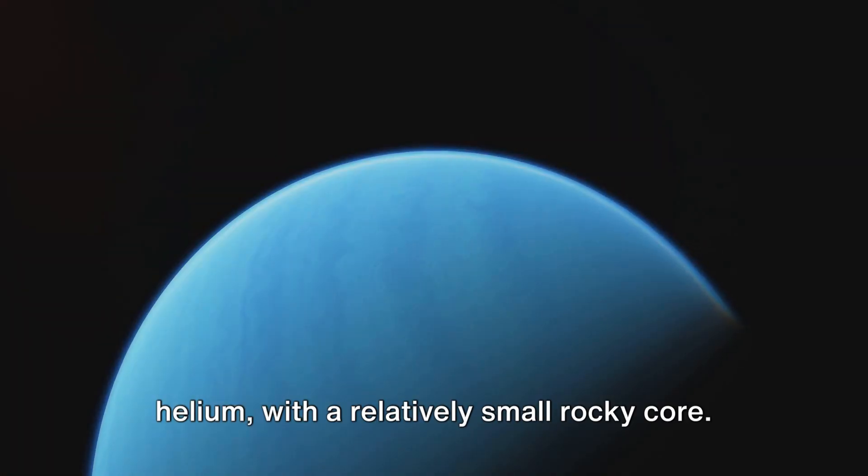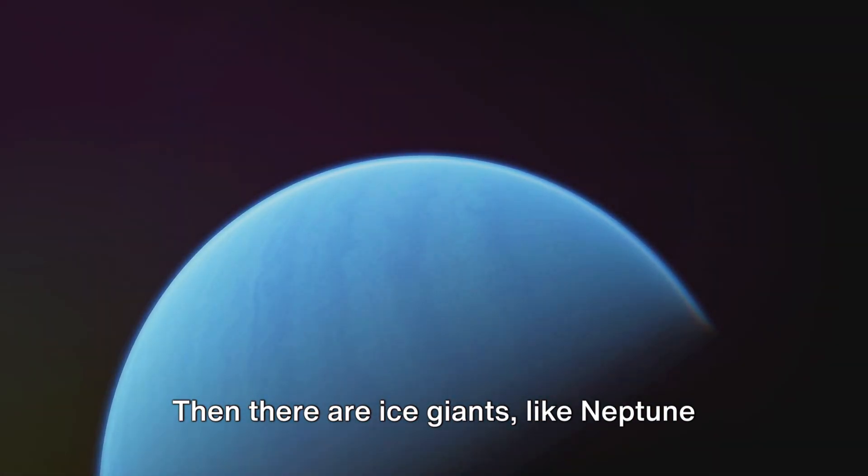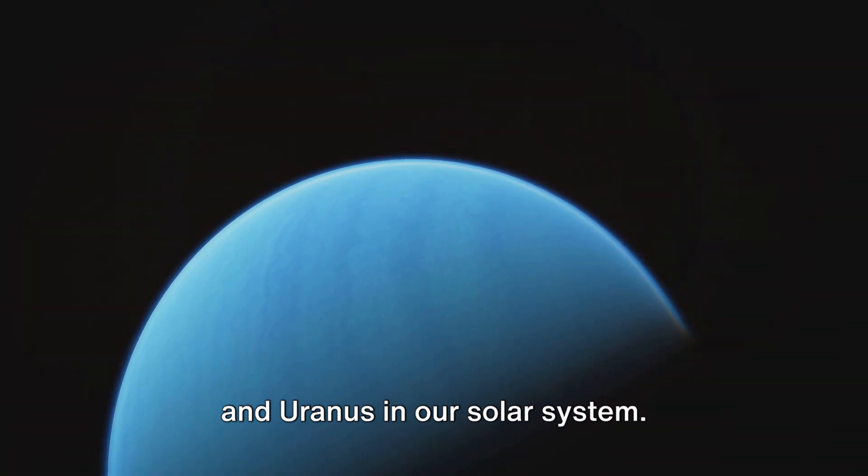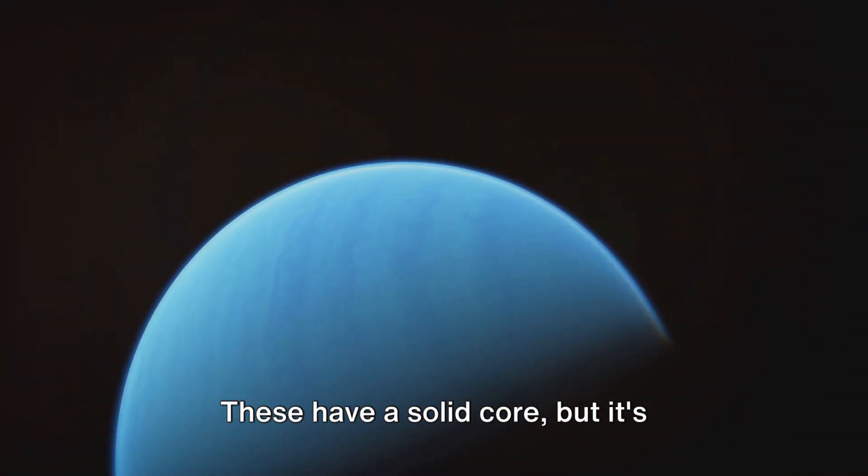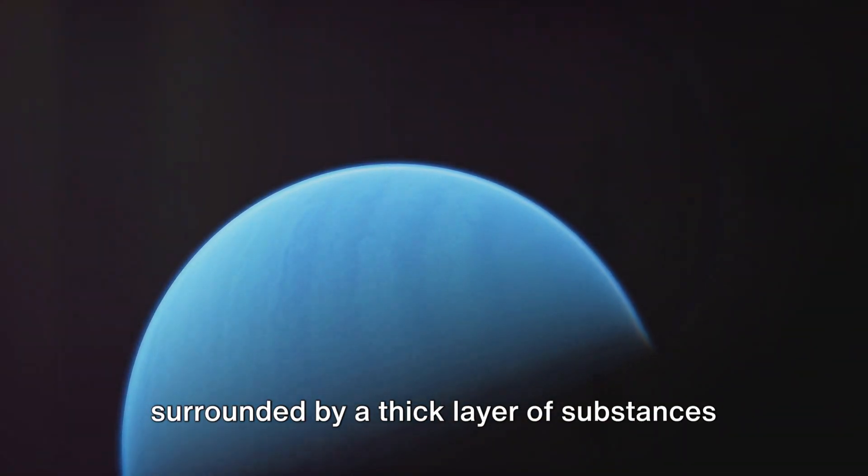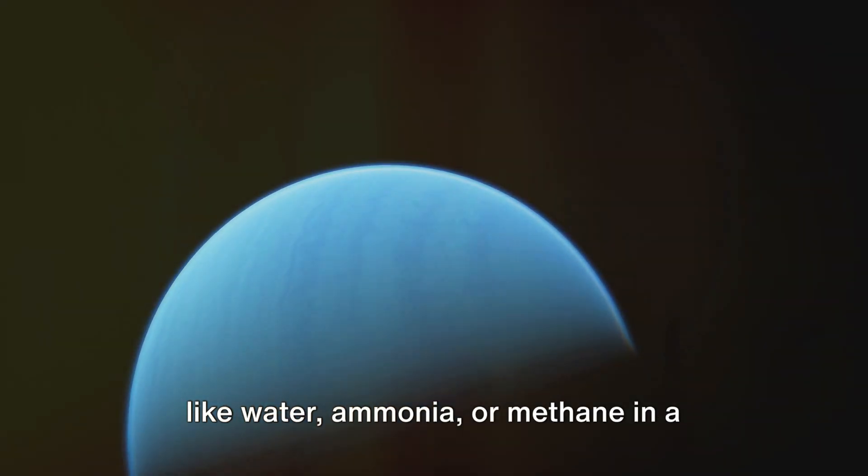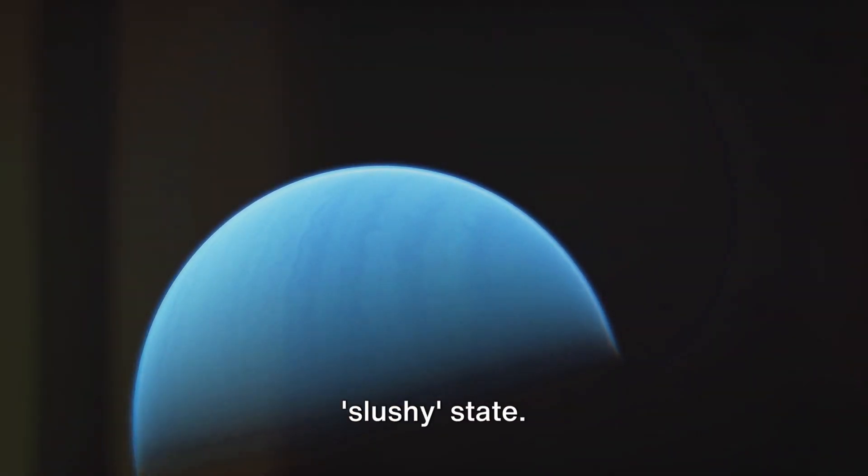Then there are ice giants, like Neptune and Uranus, in our solar system. These have a solid core, but it's surrounded by a thick layer of substances, like water, ammonia or methane in a slushy state.